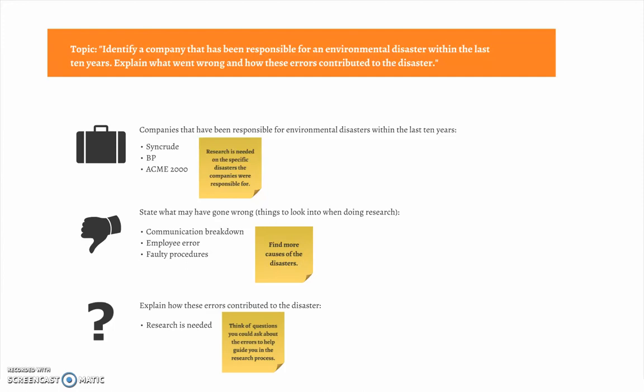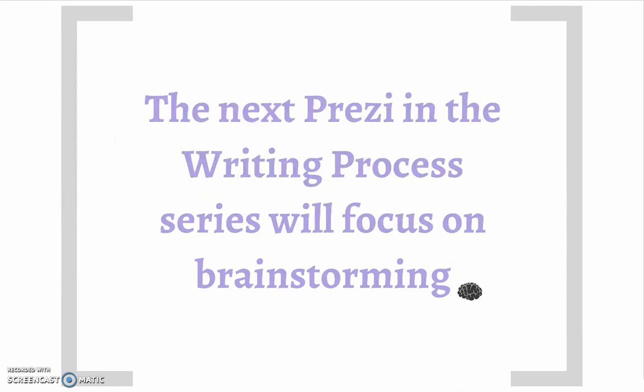To start the preliminary research process, you could go over lecture notes, textbook readings, news articles, and books that have been recently published. At this time, there is not enough information to answer how the errors contributed to the disaster, so it could be part of the focus of your preliminary research. Think of a few questions you could ask about the errors to help guide you in the research process — a question could be: who is responsible for the miscommunication? Once you have gathered adequate preliminary research, it will be time to brainstorm on your topic and get your creative juices flowing. The next Prezi in the writing process series will focus on brainstorming.